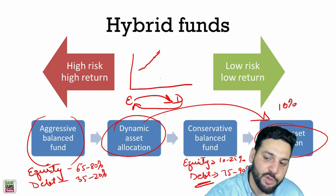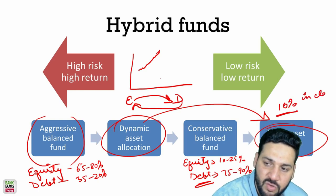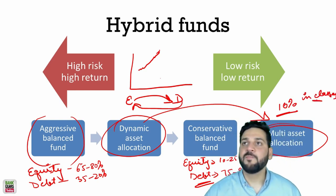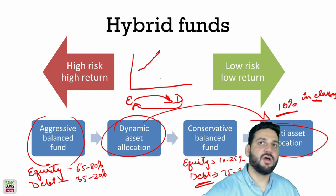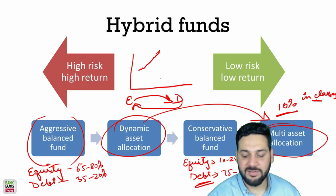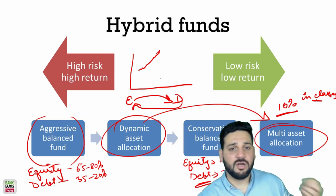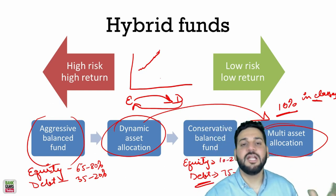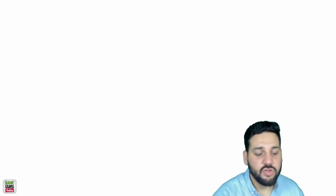In multi-asset allocation funds, at least 10% of the AUM must be invested in each of at least three asset classes — which can include equity, debt, and gold. This enforced diversification across multiple asset classes makes it less risky than dynamic asset allocation. That's all for today's session. If you have any doubts, use the discussion board to ask your questions. Thank you and have a nice day!